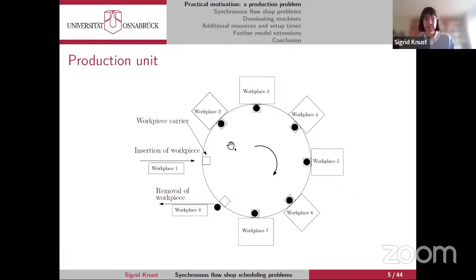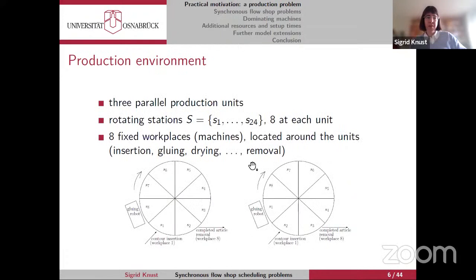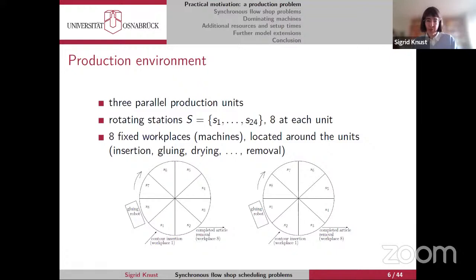There are eight jobs in parallel processed, and then every job has to go around these eight machines. When all jobs are finished on their workplace, the production unit is rotated and the next cycle begins. The last workpiece is removed and a new workpiece is inserted. The synchronization makes the problem interesting. In addition, there is a workpiece carrier—a kind of resource like a pallet—which is inserted with a workpiece and goes around until the end of production. At the company there are three parallel production units, each with eight rotating stations and eight fixed workplaces including insertion, a gluing robot, some drying steps, and finally removal.